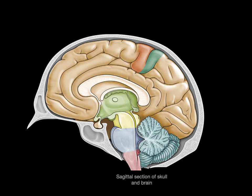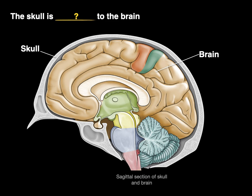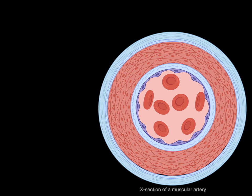Here's a sagittal section of the skull and brain, where there's the skull and there's the brain. The skull is blank to the brain. Because the skull surrounds the brain, the best term is superficial. The skull is superficial or external to the brain, because it does not matter where we look — the skull is always on the outside of the brain.